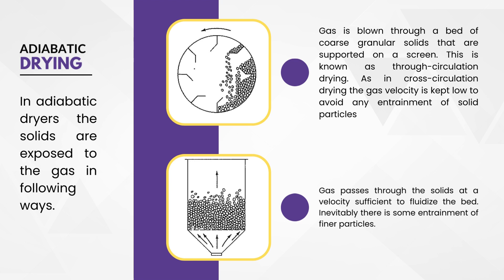For the next type of adiabatic drying, imagine a container filled with sand. If you blow air from the bottom at low speed, the sand stays still and air passes through the voids between the grains — like a packed bed. If you increase the air speed, the sand starts to move and mix with the air, forming a fluidized bed. The sand looks like a boiling liquid, and the air and sand reach similar velocities. This is also a type of adiabatic drying.